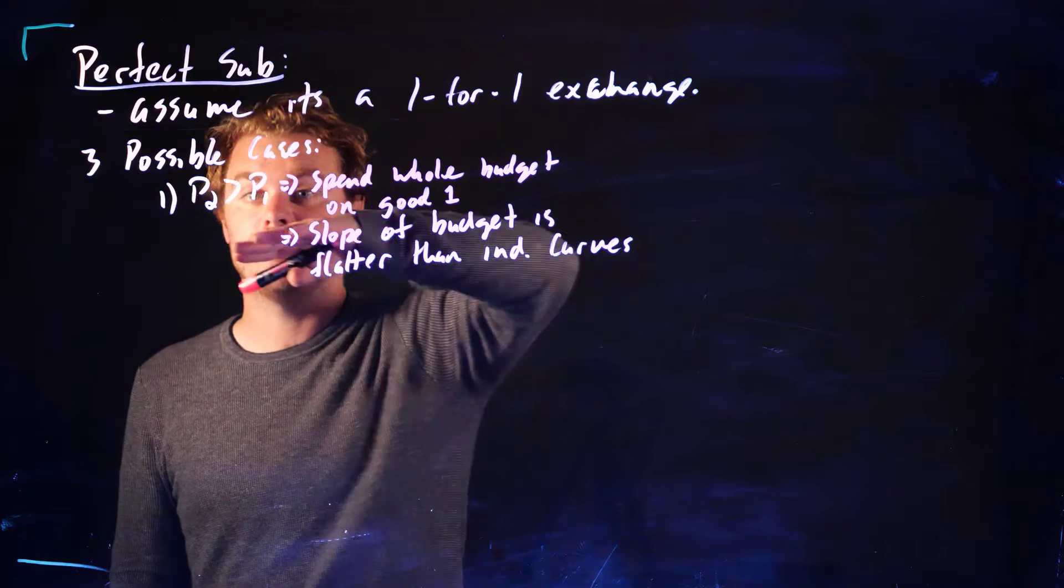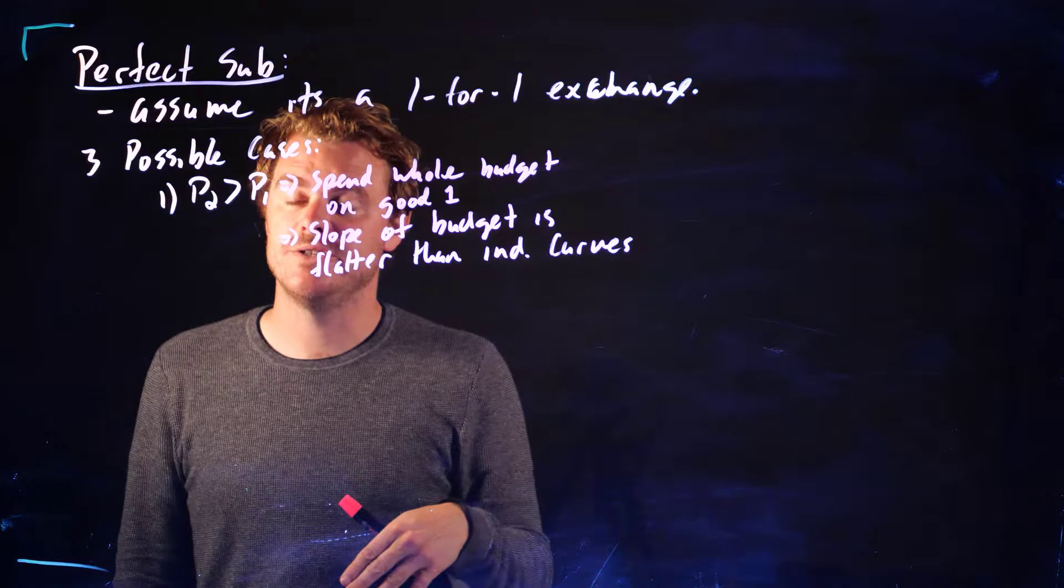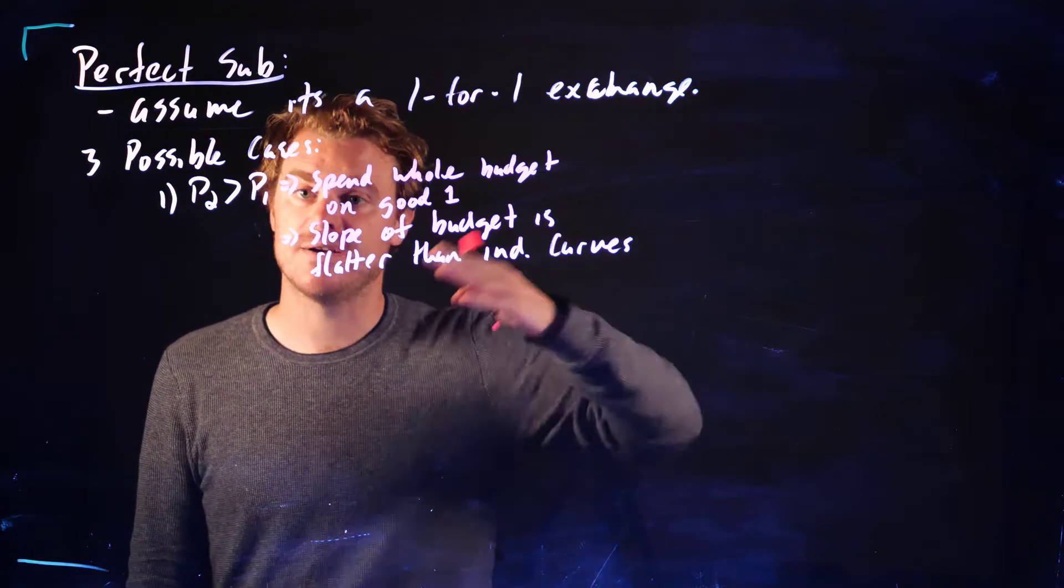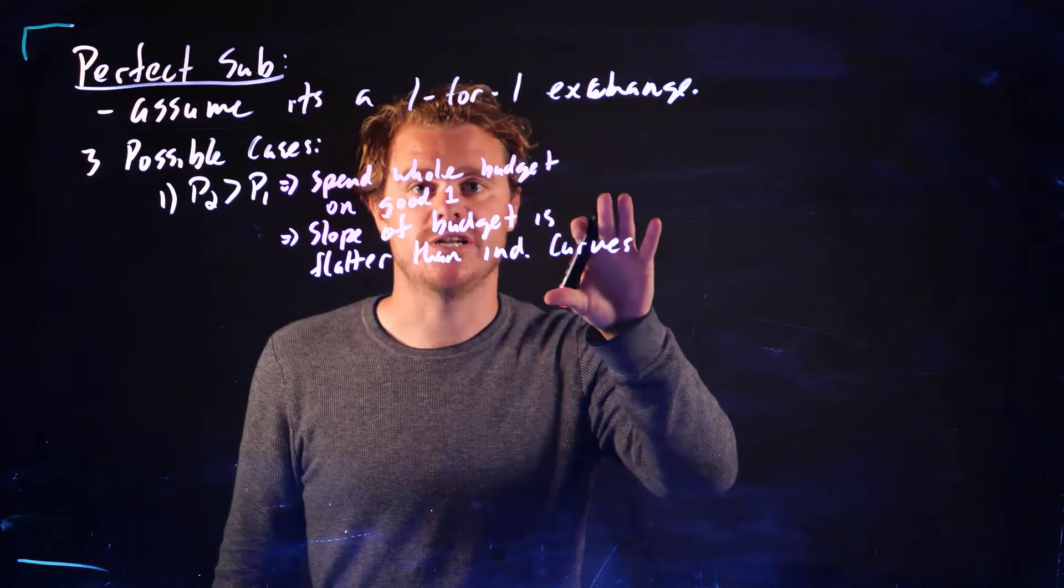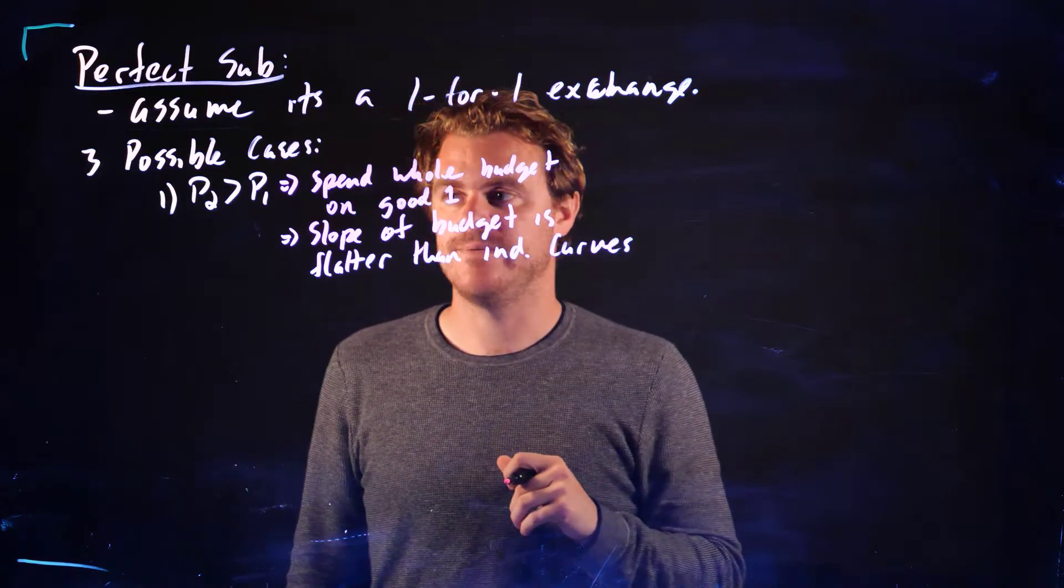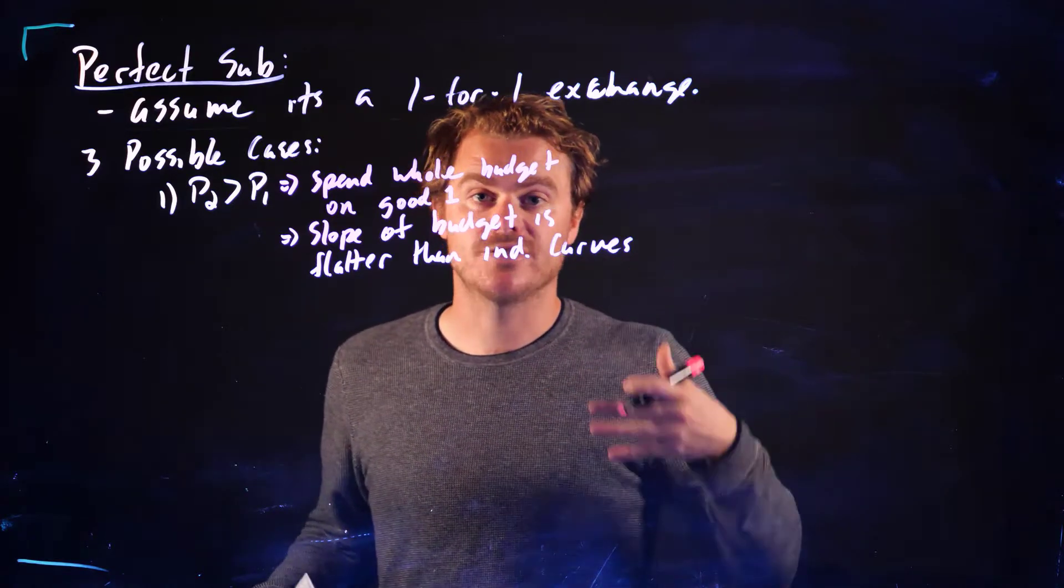Remember, if it's a one-for-one, the slope of the indifference curve is negative 1. And here, if P2 is greater than P1, then the slope, which is negative P1 over P2, is less than 1.